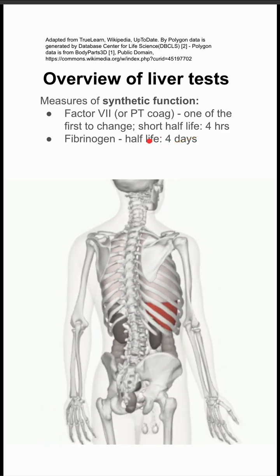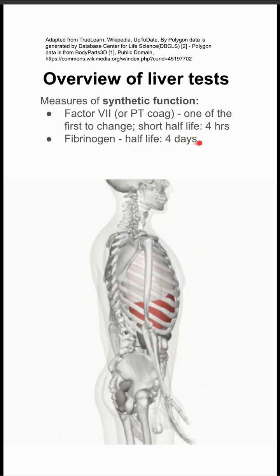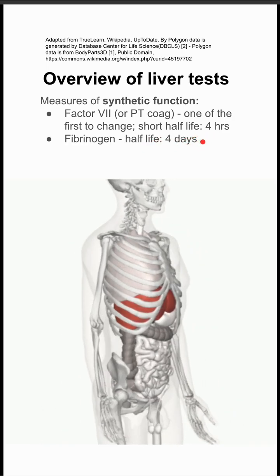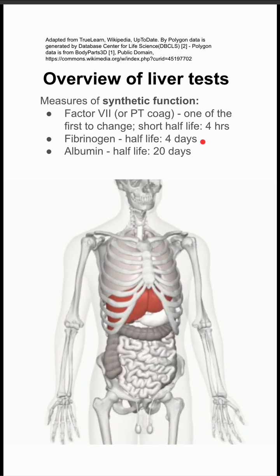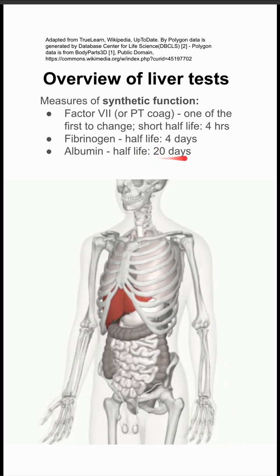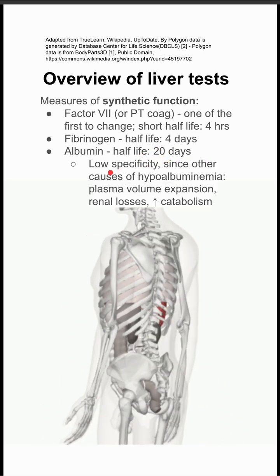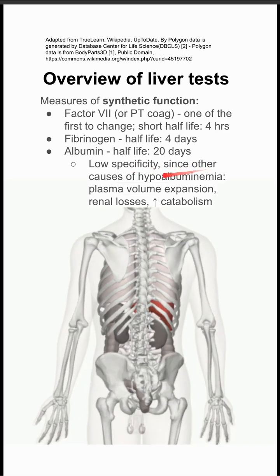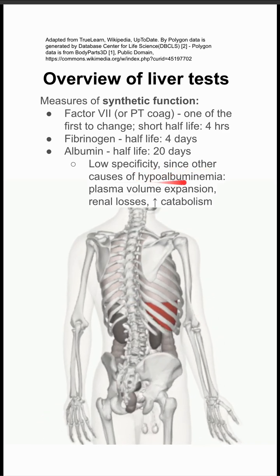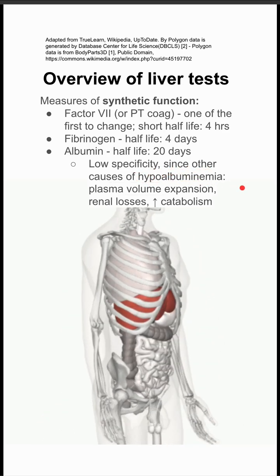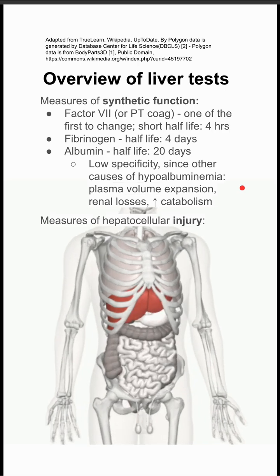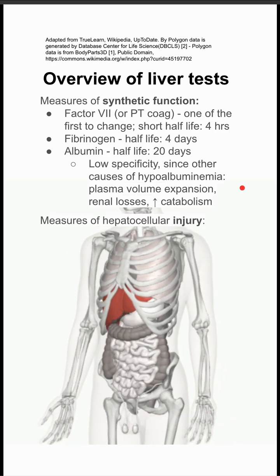Fibrinogen has a half-life of four days, so it's less useful for a quick change in liver synthetic function. Albumin lasts even longer — 20 days. Albumin also has a low specificity, since there are other causes of hypoalbuminemia, like plasma volume expansion, renal losses, and increased catabolism.